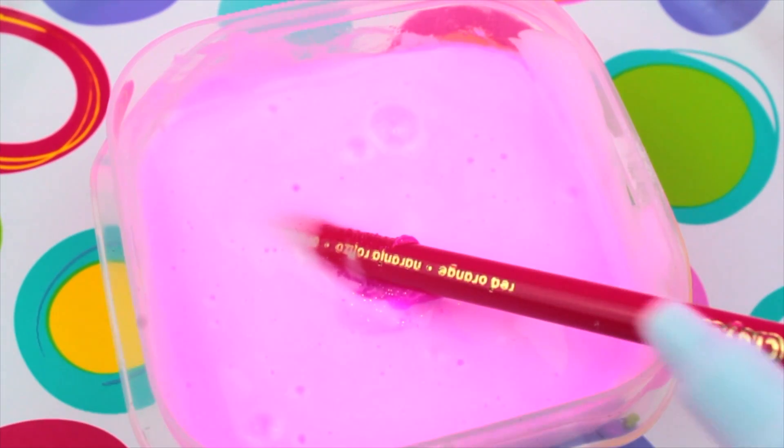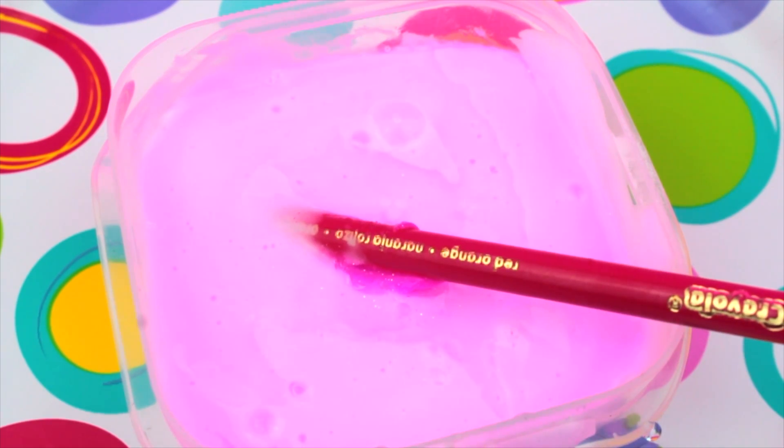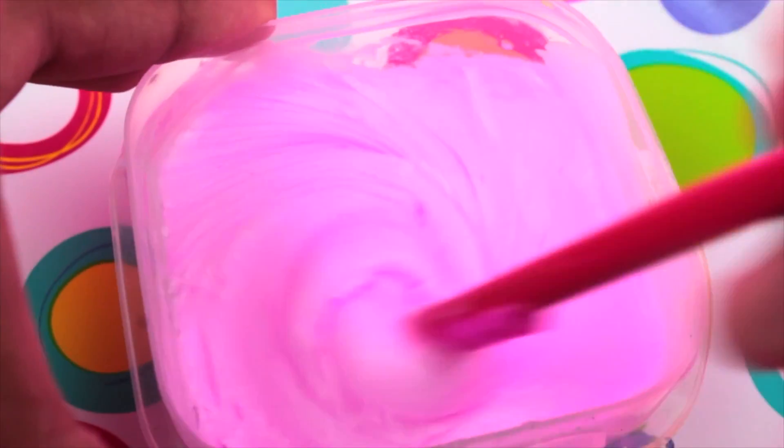Once that's mixed, I added some food coloring so it just can show in the camera, because when it's white it doesn't show. And then I just mix that together with some borax solution until it came like a slime.